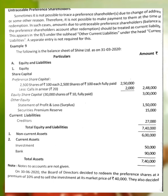Equity share capital: 30,000 shares of Rs.10 each, fully paid — Rs.3 lakh. Other equity: Statement of Profit and Loss Rs.1,50,000; Securities Premium Reserve Rs.15,000. Current liabilities: Creditors Rs.27,000. Total equity and liabilities. Non-current assets, then current assets — investments and bank.